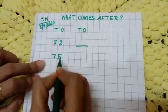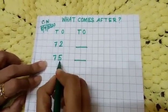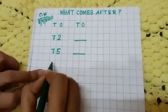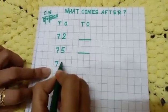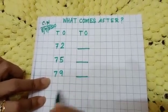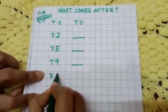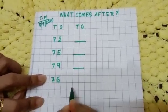Next one is 7-6, 76 dash, 76 next number. Okay, next number is 7-4, 74 dash, 74 dash.